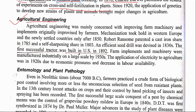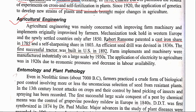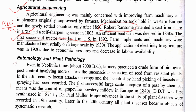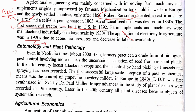Agricultural engineering: Robert Ransome patented the cast iron share in 1785. The first successful tractor was built in the US in 1892. The most important point to remember is that New Holland is the oldest tractor manufacturing company in the world. The application of electricity to agriculture is not of much importance from an examination perspective.